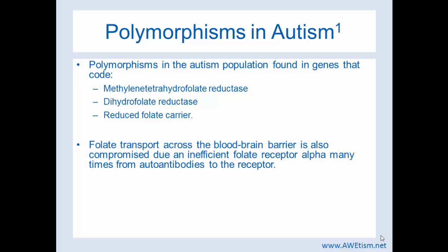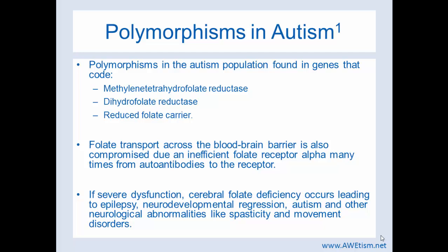Folate transport across the blood-brain barrier is also compromised in many with autism due to an inefficient folate receptor alpha. It's inefficient many times because the body is producing autoantibodies to this receptor. If severe dysfunction persists, then cerebral folate deficiency occurs — folate can't get into the brain. This can lead to epilepsy, neurodevelopmental regression, autism, and other neurological abnormalities like spasticity and movement disorders.